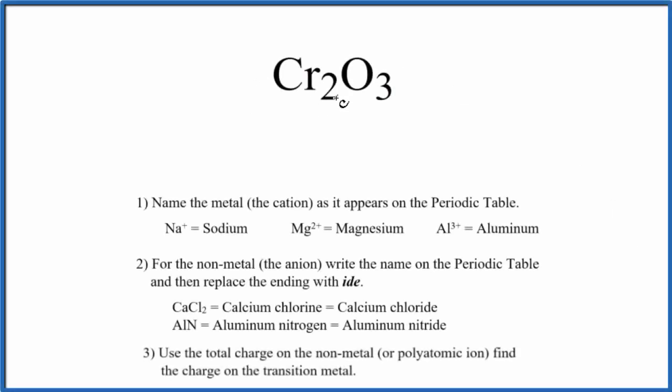To write the name for Cr2O3, we first need to recognize we have a metal here and a non-metal. So we're going to treat this as an ionic compound and write the name based on the charges. We name the metal first as it appears on the periodic table. Cr, that's chromium.